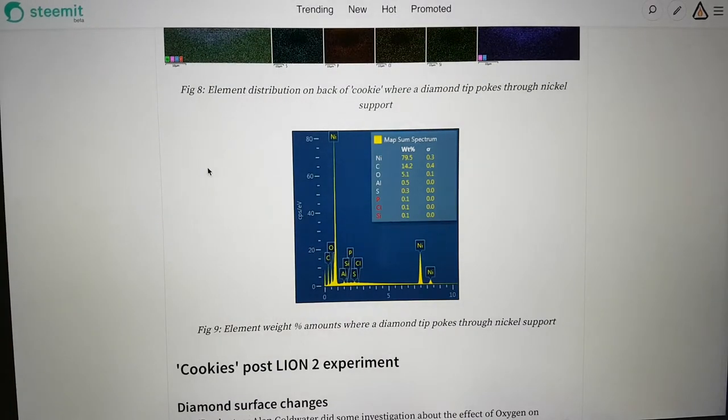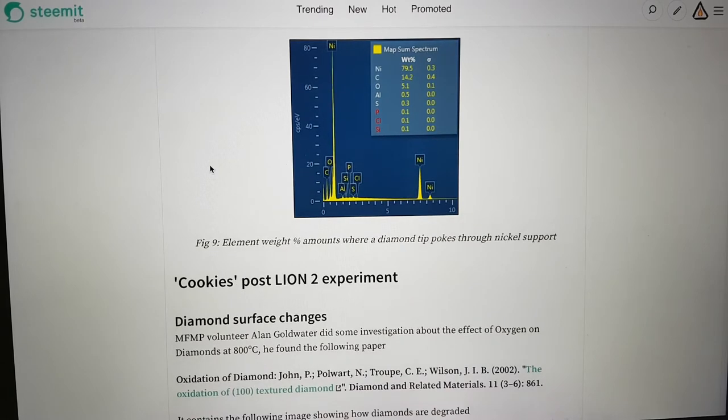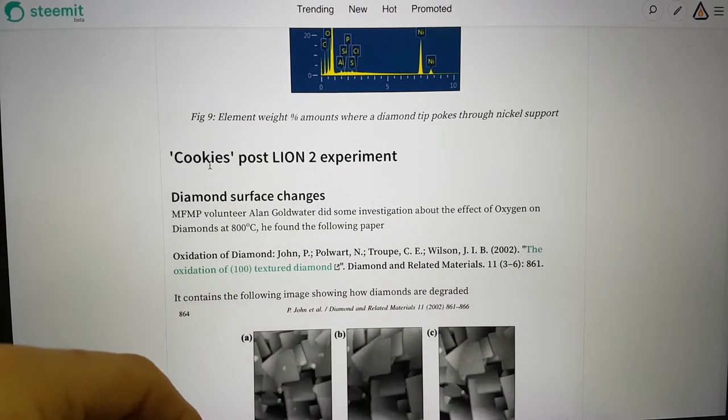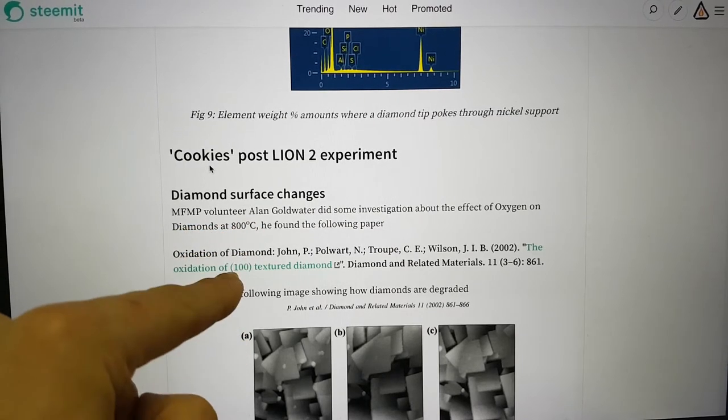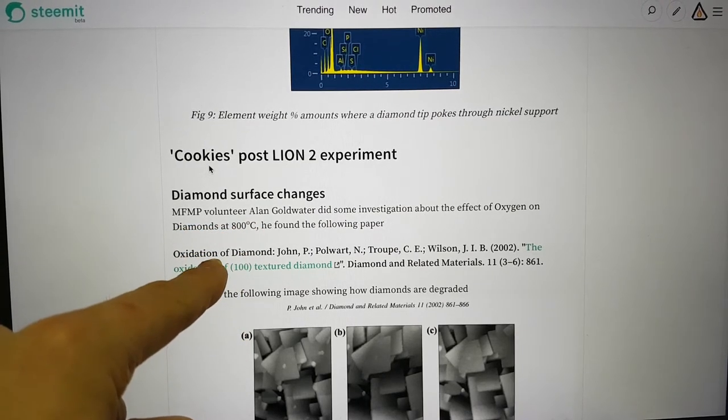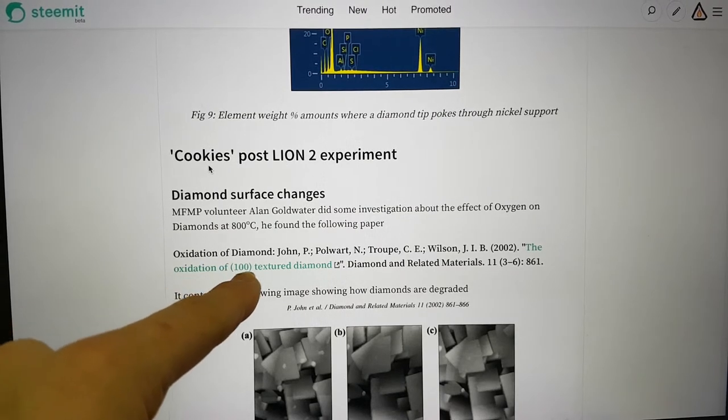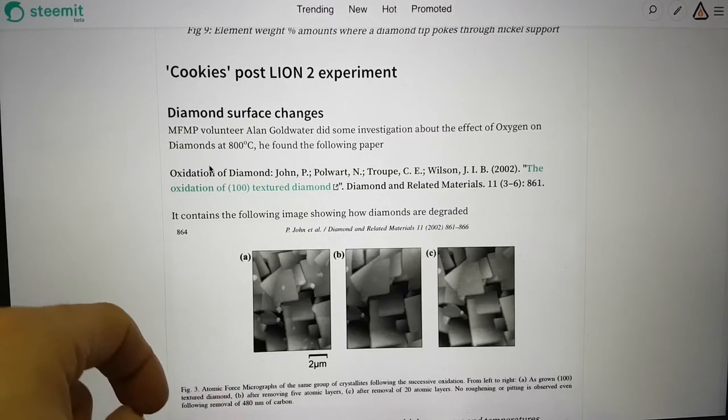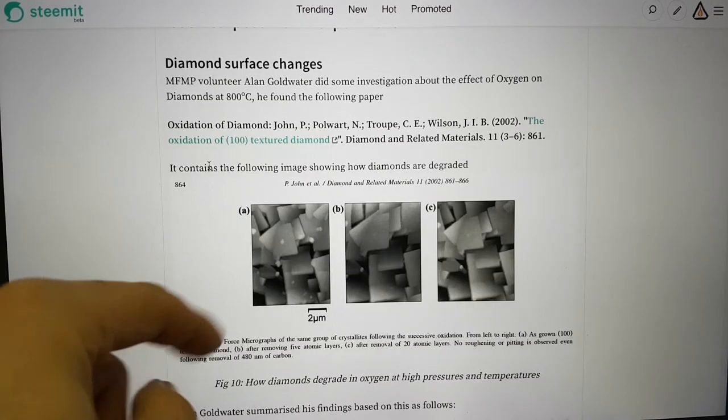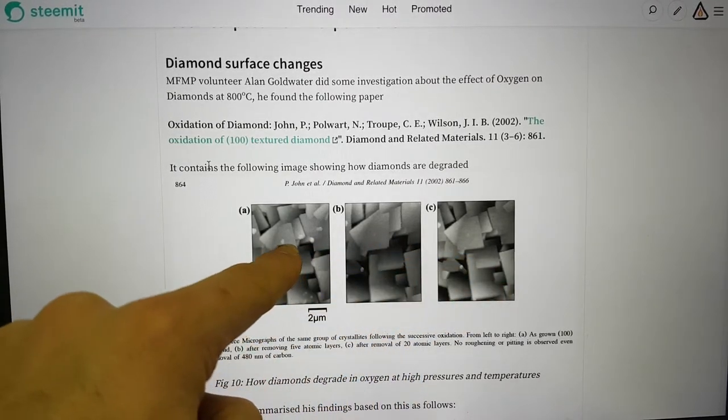Then we go on to look at the post-Lion experiment state of the cookies. Before we get into that, MFMP volunteer Alan Goldwater found this oxidation of diamond paper, the oxidation of 100 textured diamond. What he found out was essentially, here's the diamonds.